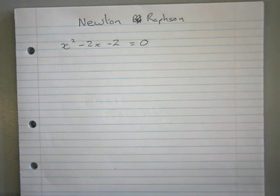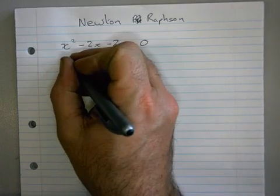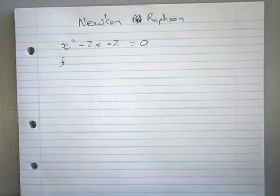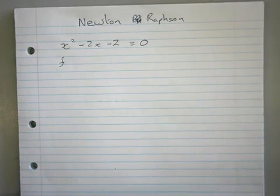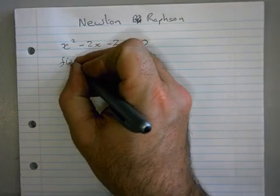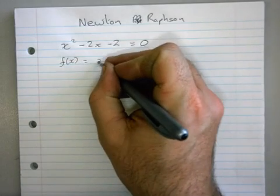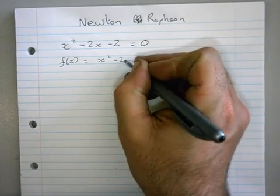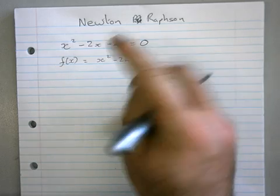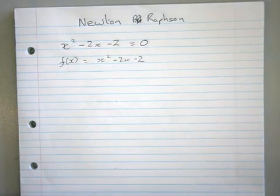So to do that we need to write some things down first. The first thing we have to write down is that f(x) is x squared minus 2x minus 2. So you just write down the whole equation as f(x).